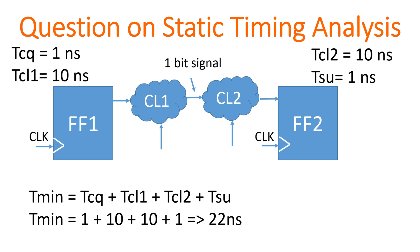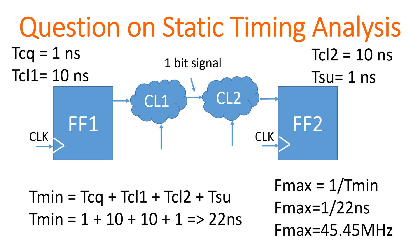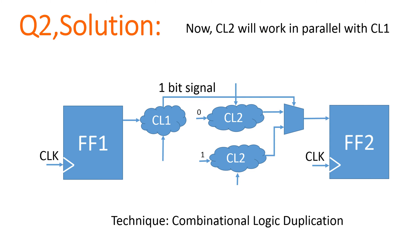From here you can easily calculate the maximum operating frequency. Maximum operating frequency equals 1 divided by T_minimum. T_minimum is 22 nanoseconds, so it is 1 / 22ns, which gives 45.45 megahertz. With this, question number one is complete.